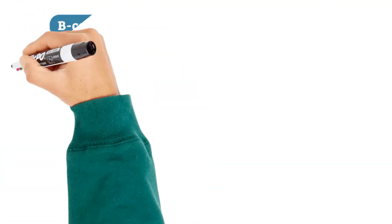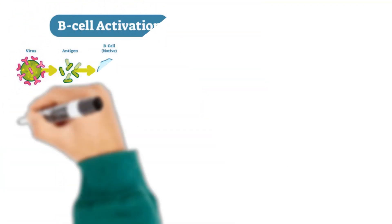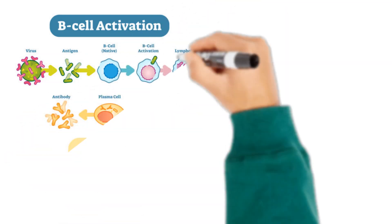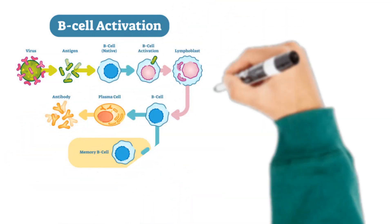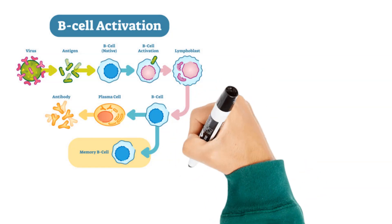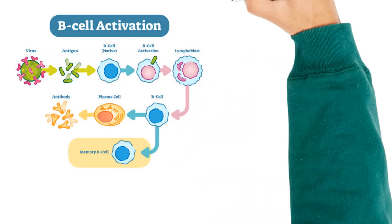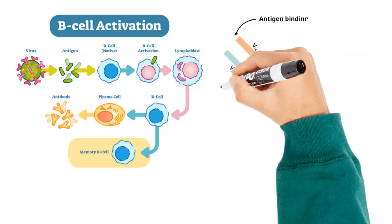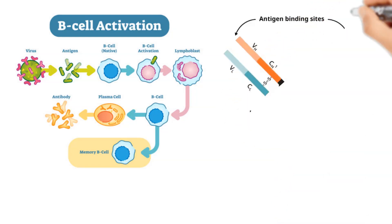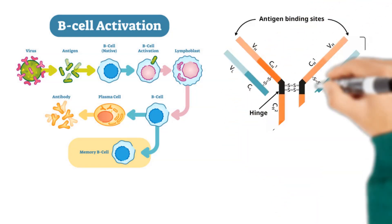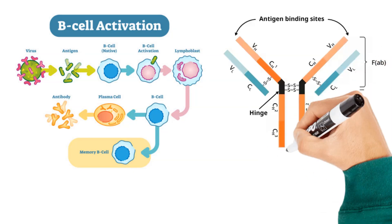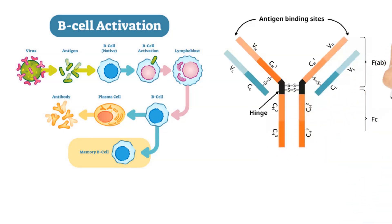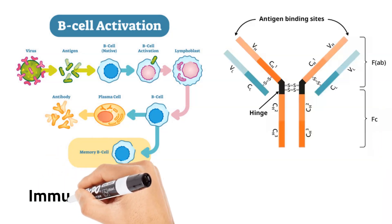Antibodies are produced by the activated B lymphocytes of the immune system in response to the detection of a foreign agent or antigen. Structurally, antibodies are composed of four polypeptide chains with two identical heavy and two light chains that are joined together by disulfide bonds, making its Y-shaped structure.